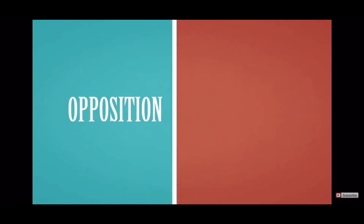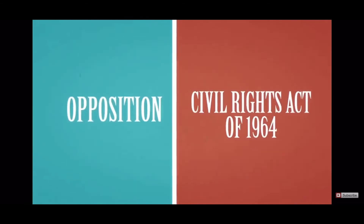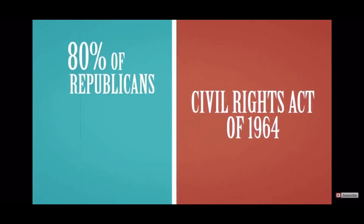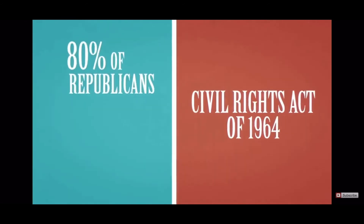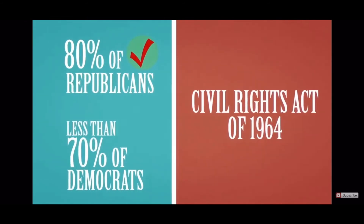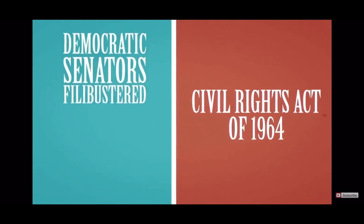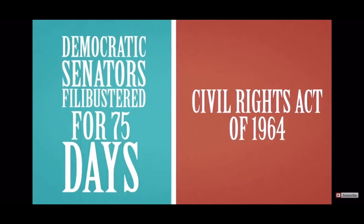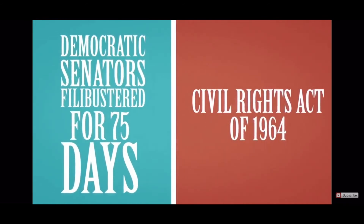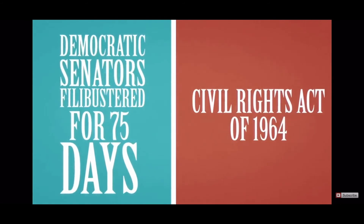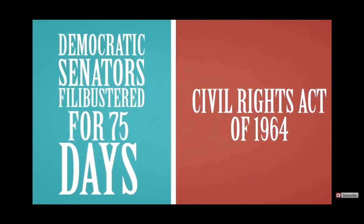A few decades later, the only serious congressional opposition to the landmark Civil Rights Act of 1964 came from Democrats. Eighty percent of Republicans in Congress supported the bill; less than 70 percent of Democrats did. Democratic senators filibustered the bill for 75 days until Republicans mustered the few extra votes needed to break the logjam.